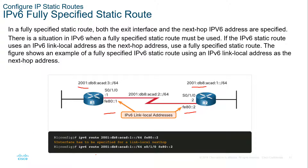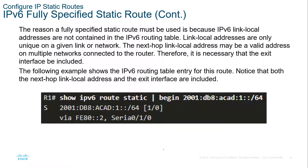So here we'll see IPv6 route, the address to match, out serial interface, and it will go to the link local address. The fully specified static route — this is the IPv6 version of it.